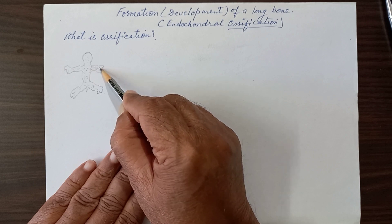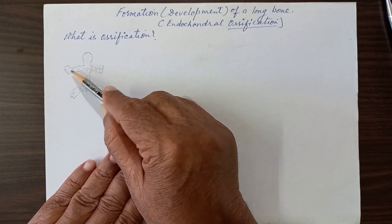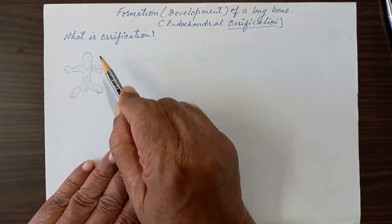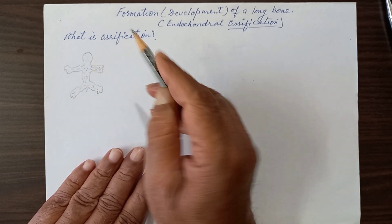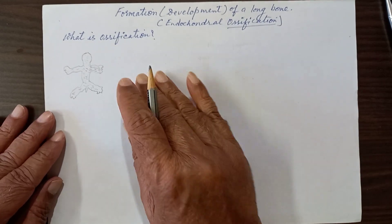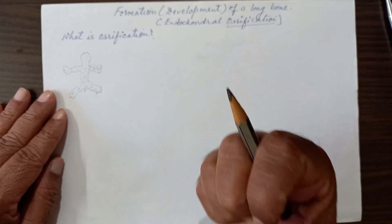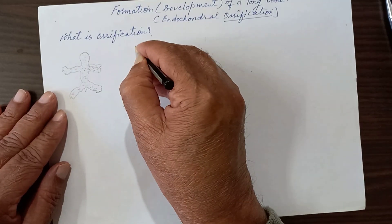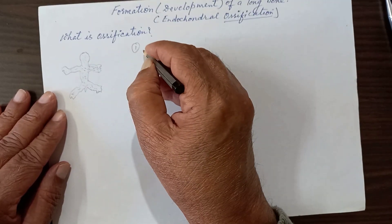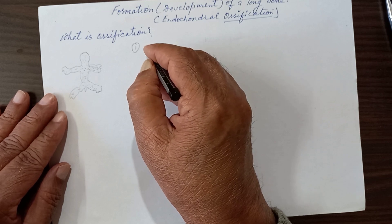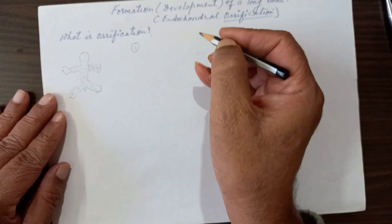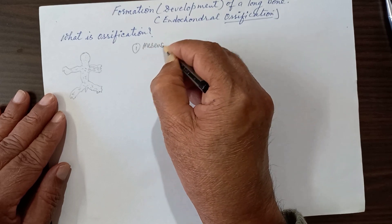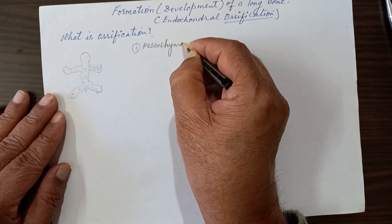Mesenchymal connective tissue of the embryo or fetus is present in the limb buds. The first step in formation of bone is their concentration or condensation. So the first step is mesenchymal condensation.